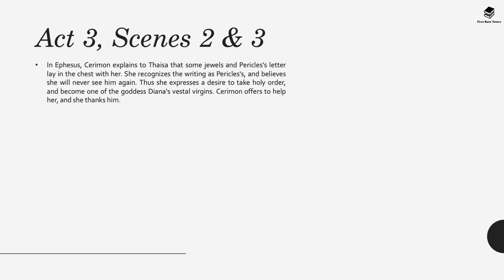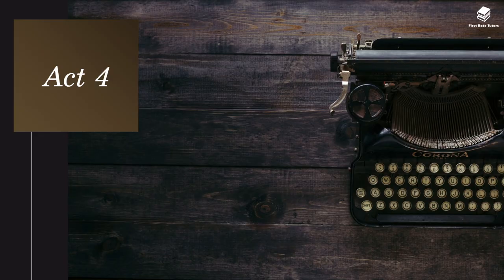In Ephesus, Cerumen explains to Thaisa that some jewels and Pericles's letter lay in the chest with her. She recognises the writing as Pericles's and believes she will never see him again. Thus she expresses a desire to take holy orders and become one of the goddess Diana's vestal virgins. Cerumen offers to help her, and she thanks him.